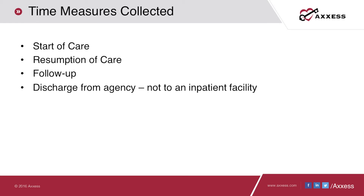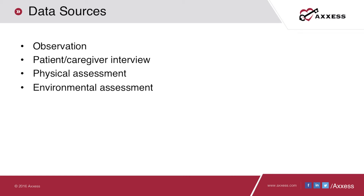The time measures collected are the start of care OASIS and resumption of care OASIS, and again at follow-up OASIS or discharge from agency OASIS. Observe the patient as they ambulate and discuss with the patient and caregiver how the patient ambulates, and ask: is the patient ambulating safely? Include a physical assessment as well to determine the patient's physical capabilities.